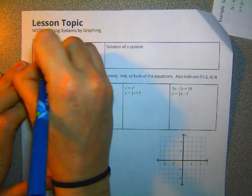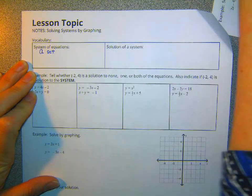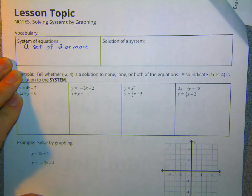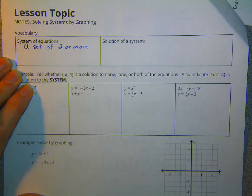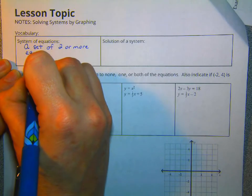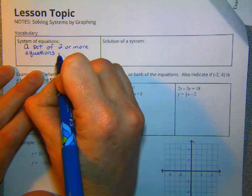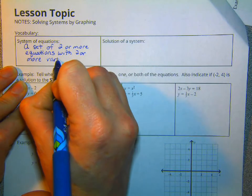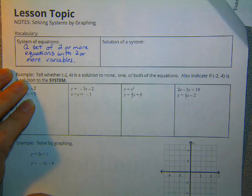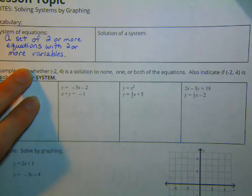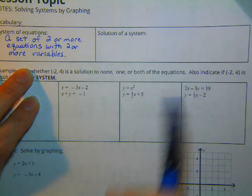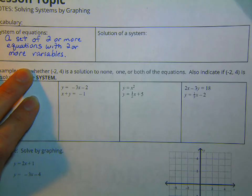A system of equations is a set of two or more. In Algebra 1, it will just be two. We're not going to do more than two equations or inequalities. So for us, it's really going to be just two. It's going to be a set of two or more equations with two or more variables. So a system of equations is a set of two or more equations with two or more variables.